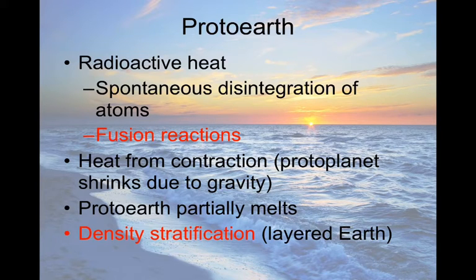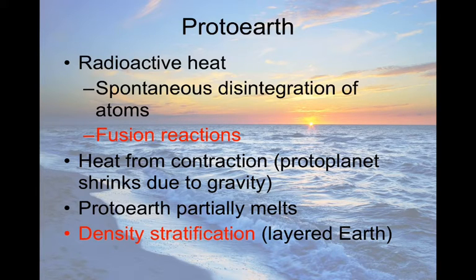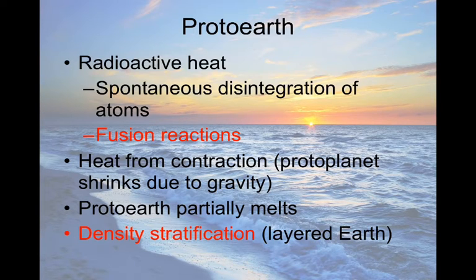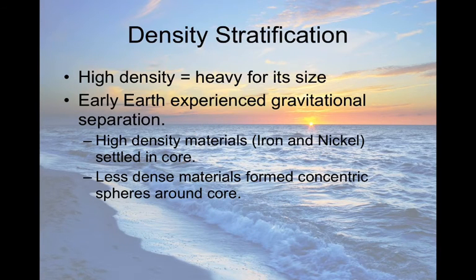Proto-Earth had a lot of heat, particularly radioactive heat from the disintegration of atoms that had been formed in earlier suns and were flying around in the dust cloud. There was also fusion reaction occurring. The planet became so heavy that the denser material on the outside began to sink — a contraction — and as this contraction occurred, heat moved from the center outward. Because of all this heat, the surface of proto-Earth melted and reformed multiple times, as evidenced by very old radioactive materials in the Earth's crust.